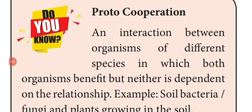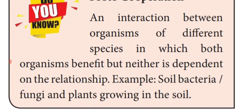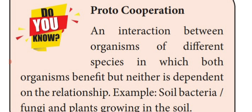The next book inside question is proto-cooperation. It is the interaction between organisms of different species in which both the organisms are benefited but neither is dependent on the relationship. Example: soil bacteria, fungi, and plants growing in the soil are all benefited — they are different species all living in the same environment, all benefited, but not having any dependent relationship. That type of cooperation is known as proto-cooperation.